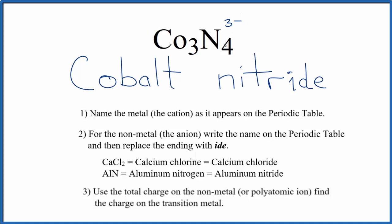And we have 4 of them. 4 times 3 minus is 12 minus. So the cobalt, these 3 cobalt, they have to have 12 plus for this to add up to 0, give us a net charge of 0.